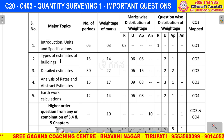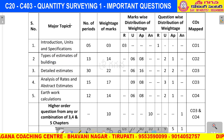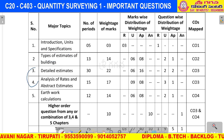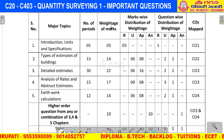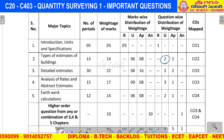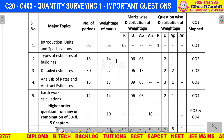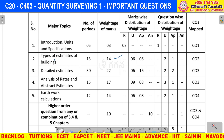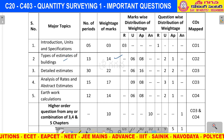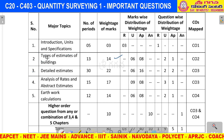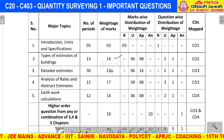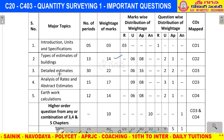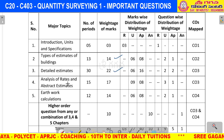Next, we have Types of Estimates of Building. There are three types of estimates: Approximate Estimate, Detailed Estimate, and Abstract Estimate. The Approximate Estimate is covered in Unit 2, the Detailed Estimate in Unit 3, and the Abstract Estimate in Unit 4.